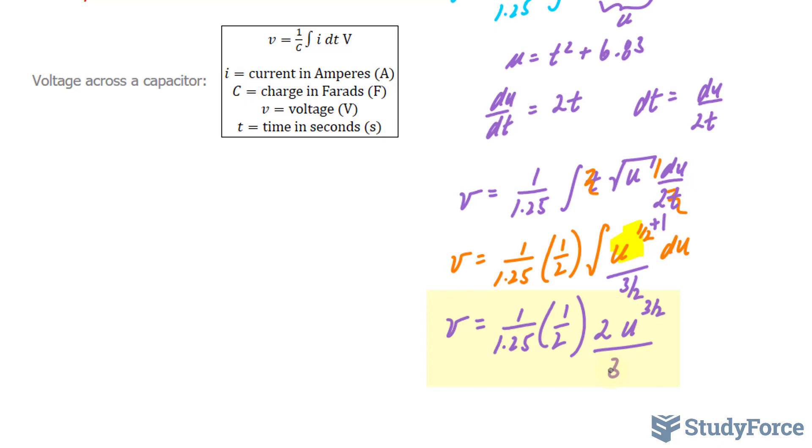Of course I set u is equal to t squared plus 6.83, so I'm going to switch this with t squared plus 6.83. There you go. So, I have found the voltage formula for this function.